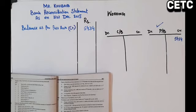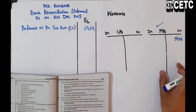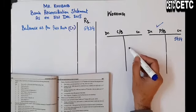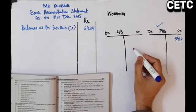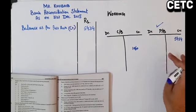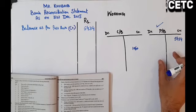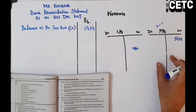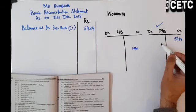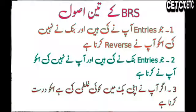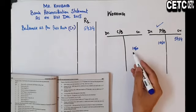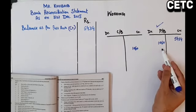Checks issued but not presented: rupees 1,060۔ Customer نے check issue کیے لیکن bank میں ابھی تک نہیں پہنچے۔ یہ کام ادھر ہو چکا ہے — party name debit اور bank credit کیا ہوگا۔ اب آپ نے اس کے angle سے دیکھنا ہے: جو کام اس party نے کر لیا ہے ادھر نہیں ہوئے، تو ادھر یہ credit ہے اس لیے ہم اس کو debit کر لیں گے۔